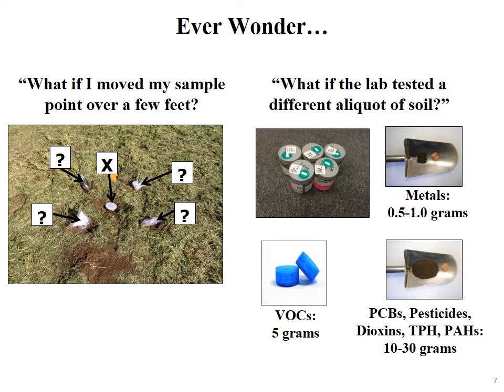For VOCs, labs only test five grams of soil — enough soil to put into a bottle cap. So think about that when you spend a lot of money collecting samples to test for VOCs: you're really just scattering a few soda bottle caps around your site. How representative do you think that really is? Contaminants have to be extremely uniform in soil for it to be representative. For PCBs, pesticides, dioxins, TPH, PAHs, and other chemicals, laboratories typically test 10 to 30 grams — now you're getting up to a spoonful. But still think about the area where you collected it from. How many potential spoonfuls were there within that area? What's the chance the one the lab happened to test is representative?